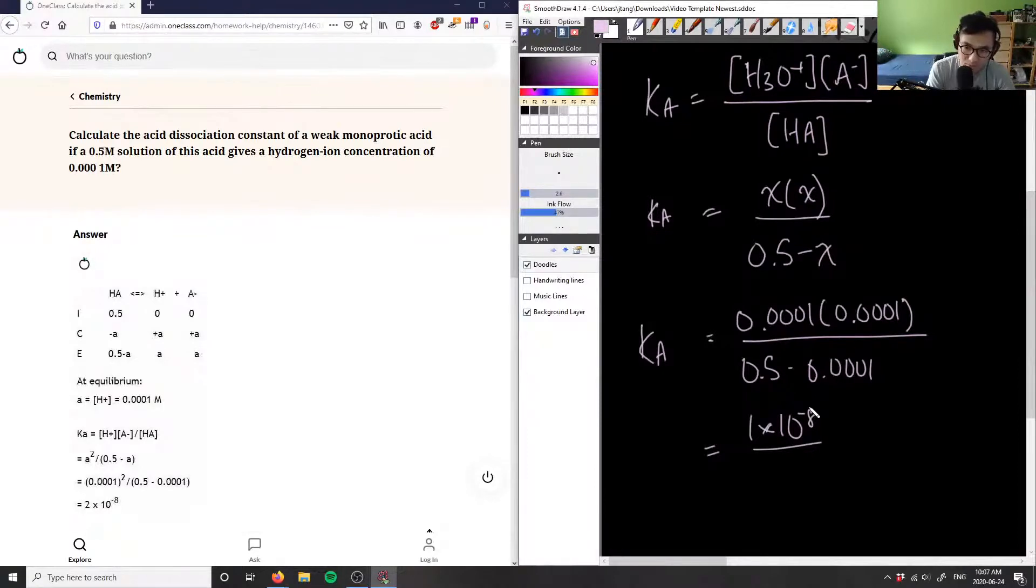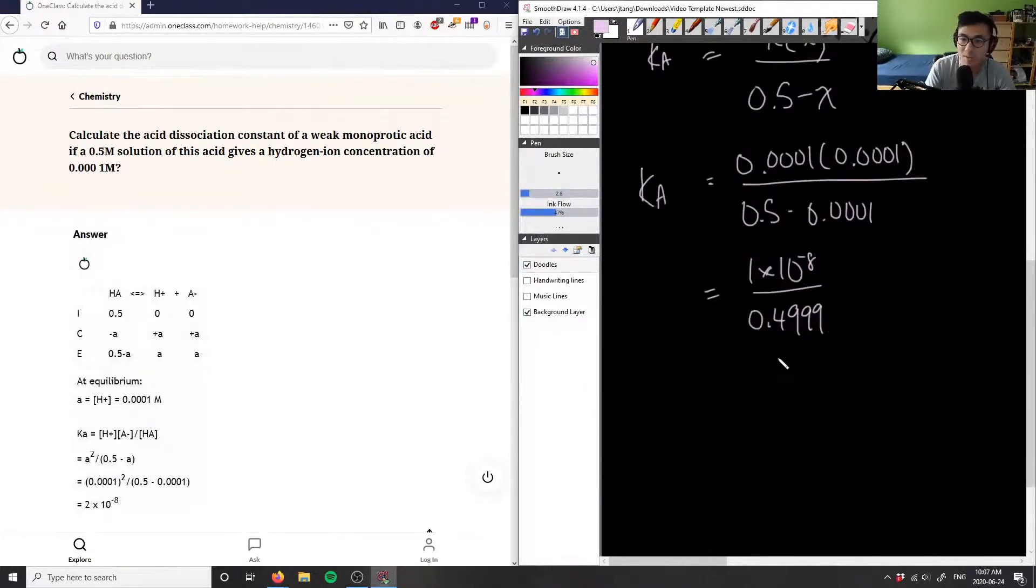And then I have 0.5 minus 0.0001, I'm going to get 0.4999. So simply think of it as multiplying by 2 here. So I have 1 times 10 to the negative 8 divided by 0.4999. This will give us a value of 2.00 times 10 to the negative 8.